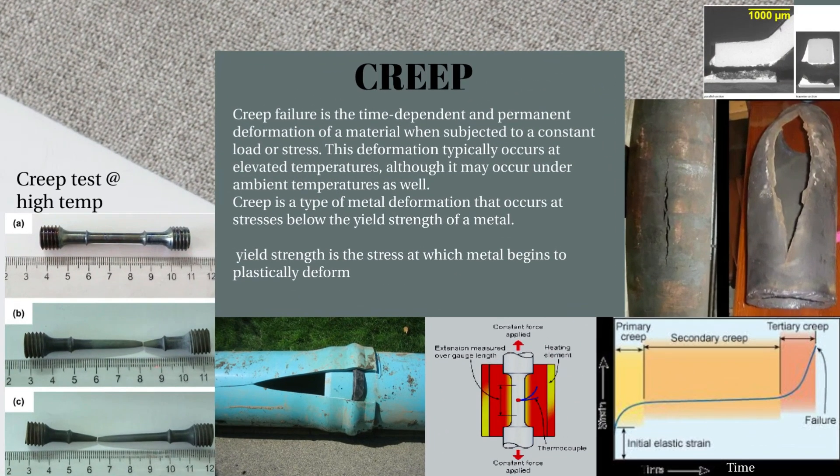Creep failure is the time-dependent and permanent deformation of a material when the material is subjected to a constant load or stress. This deformation typically occurs at elevated temperatures, but it can occur at ambient temperature as well. Importantly, Creep is a type of metal deformation that occurs at stresses below the yield strength of the material. Yield strength is the stress at which a metal begins to plastically deform.